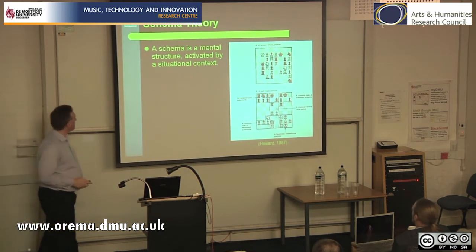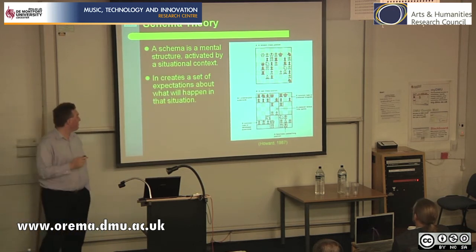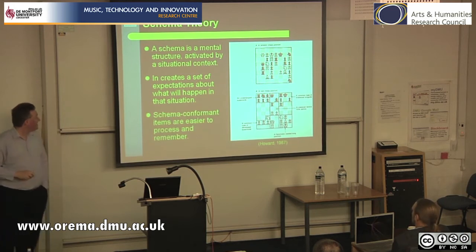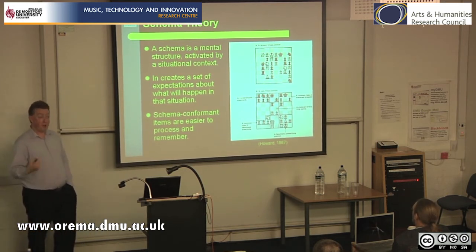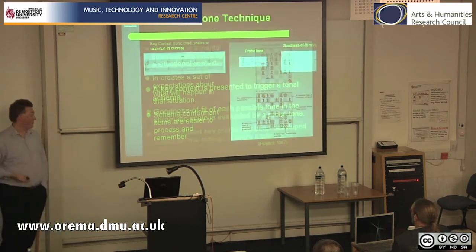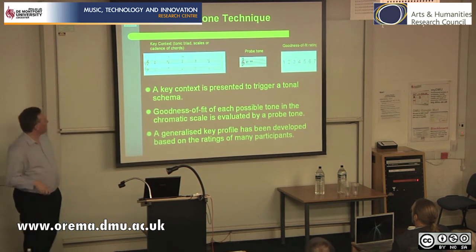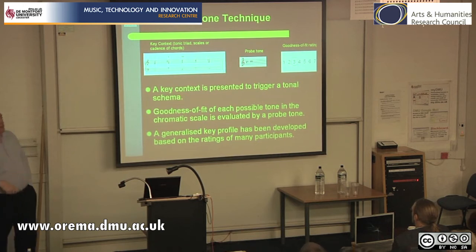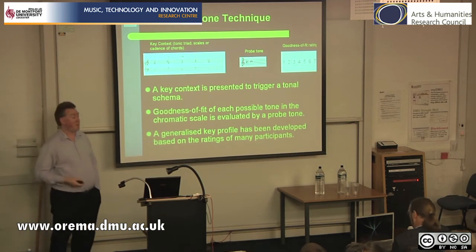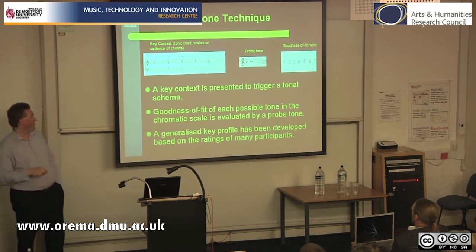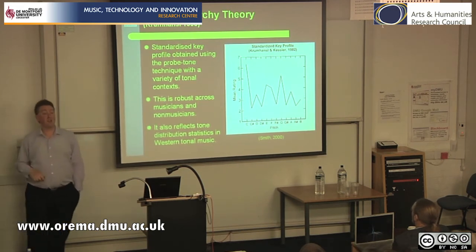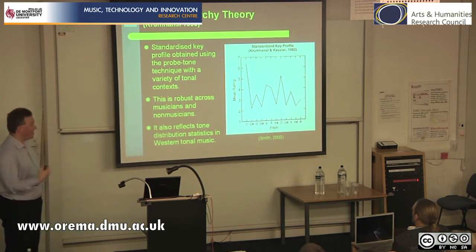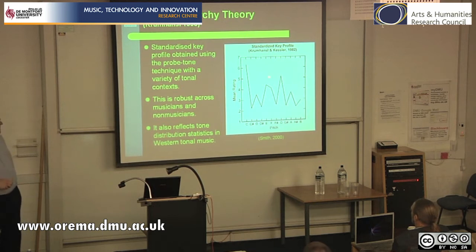Schema theory: a schema is a mental structure activated by situational context — tonal music, chess, and so on. It creates a set of expectations about what will happen in that situation. The schema is triggered, brings other expectations based on experience, and this is what composers play with. Schema-conformant items are easier to process and remember. This has been evaluated through the probe-tone method — play a key context and ask how well a tone fits. The result is what's called a key profile, which is very robust and very similar across musicians and non-musicians within a culture. In C major, C fits very well and A-sharp doesn't — and this actually reflects the distribution of tone statistics in Western tonal music.